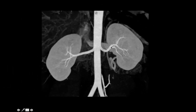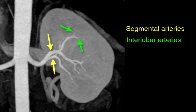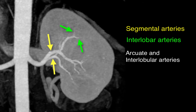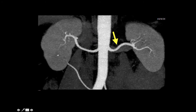Each main renal artery branches into segmental arteries, which course through the kidney and further branch into the interlobar arteries that run along the margin of the pyramid. The interlobar arteries give rise to arcuate and interlobular arteries, which may sometimes be too small to see on CT. In this example, the right kidney is supplied by a main renal artery as well as an accessory artery arising more distally off the aorta, while the left kidney is supplied by a single left renal artery.